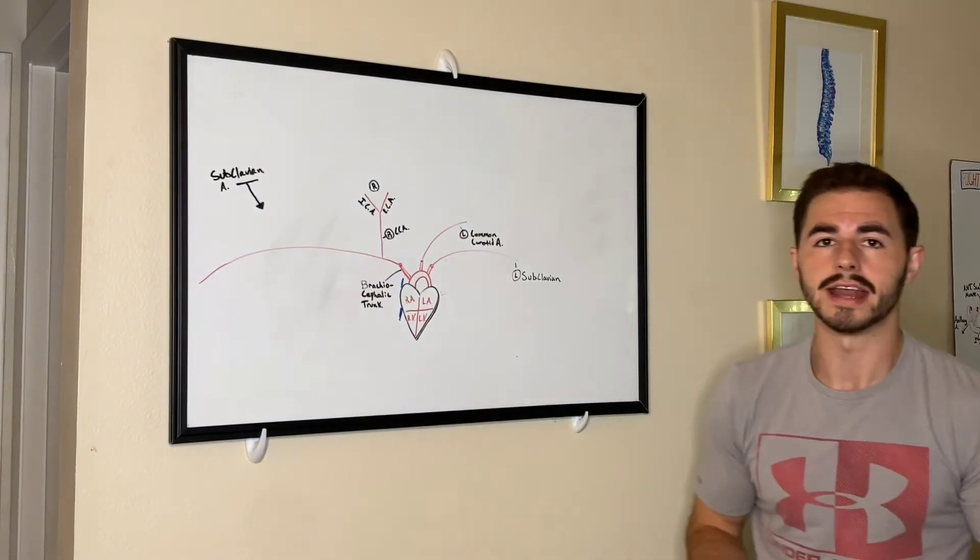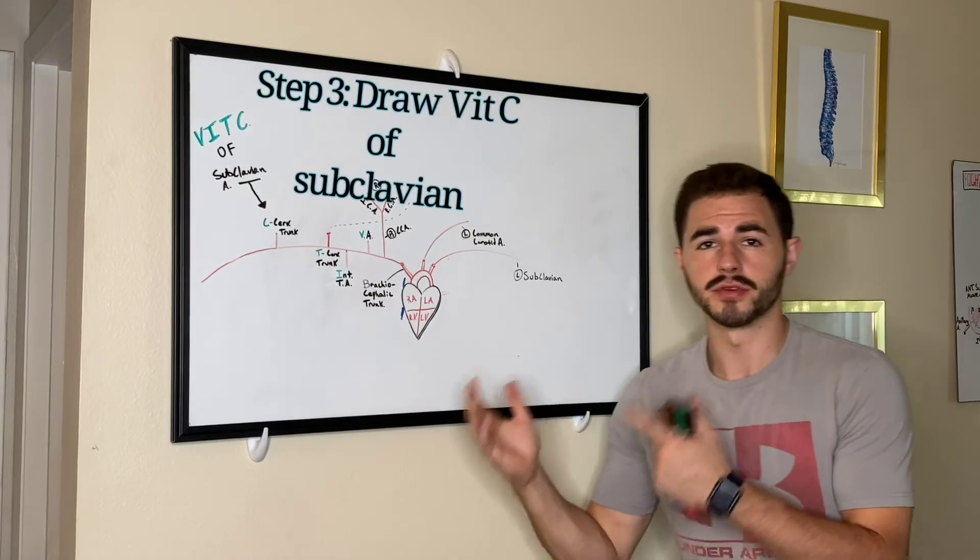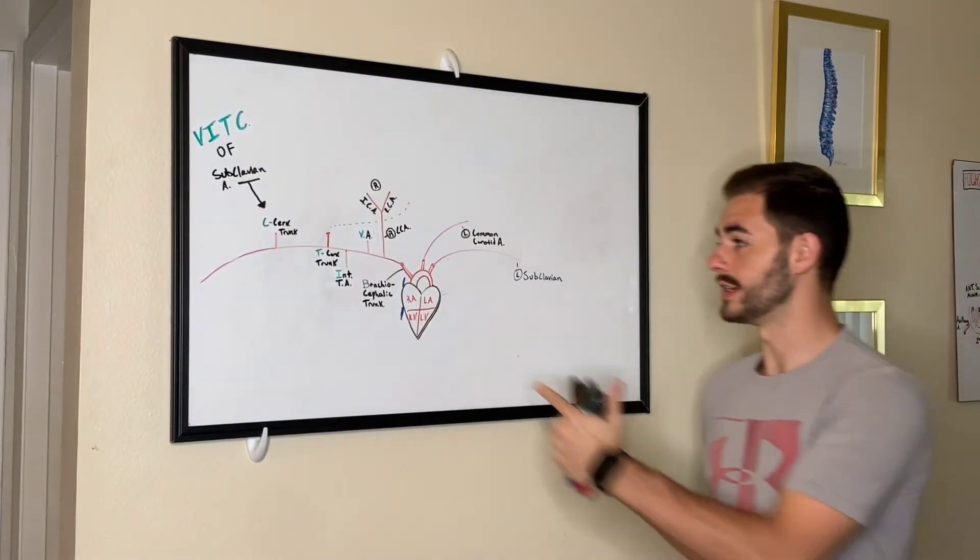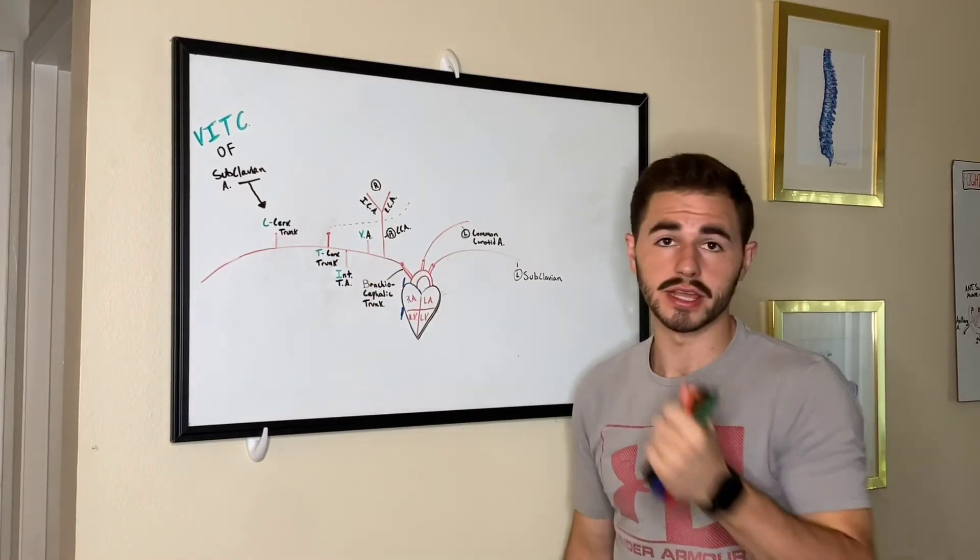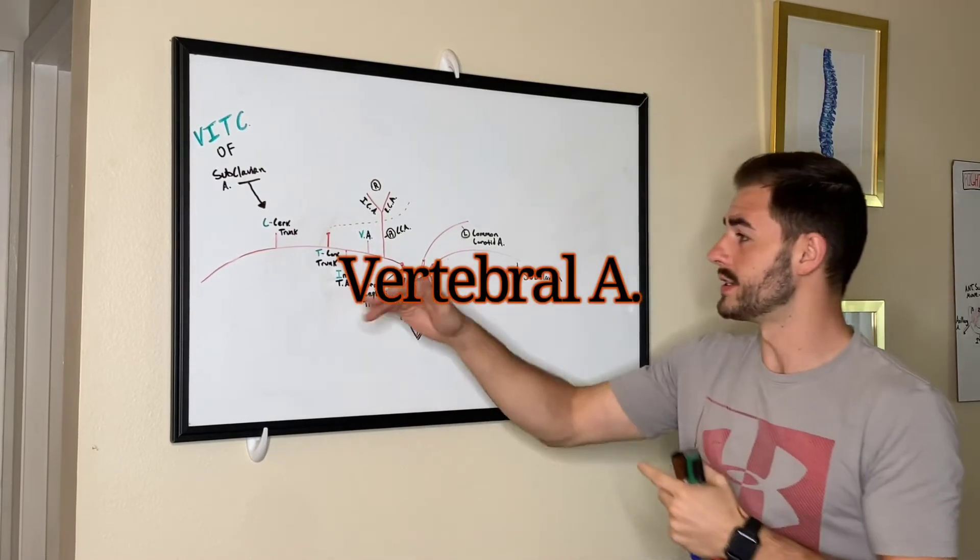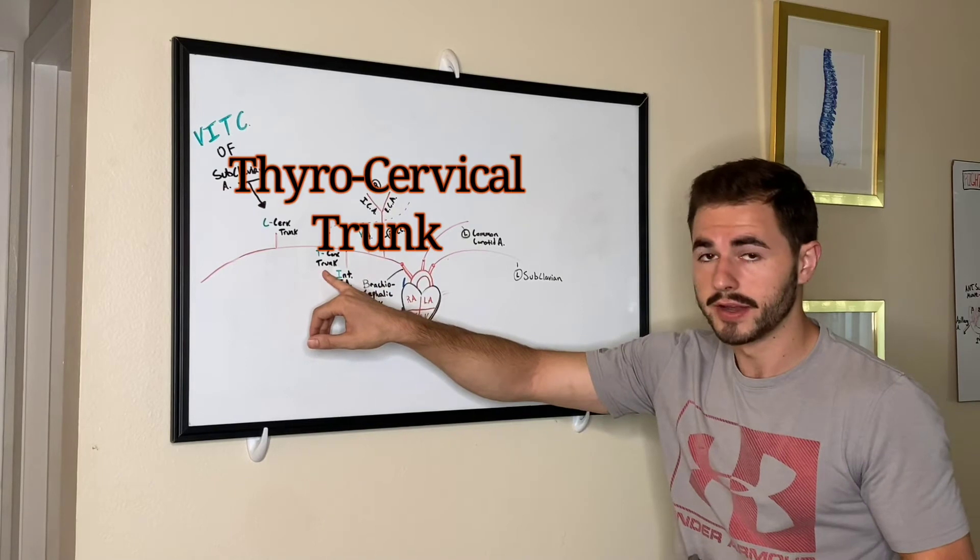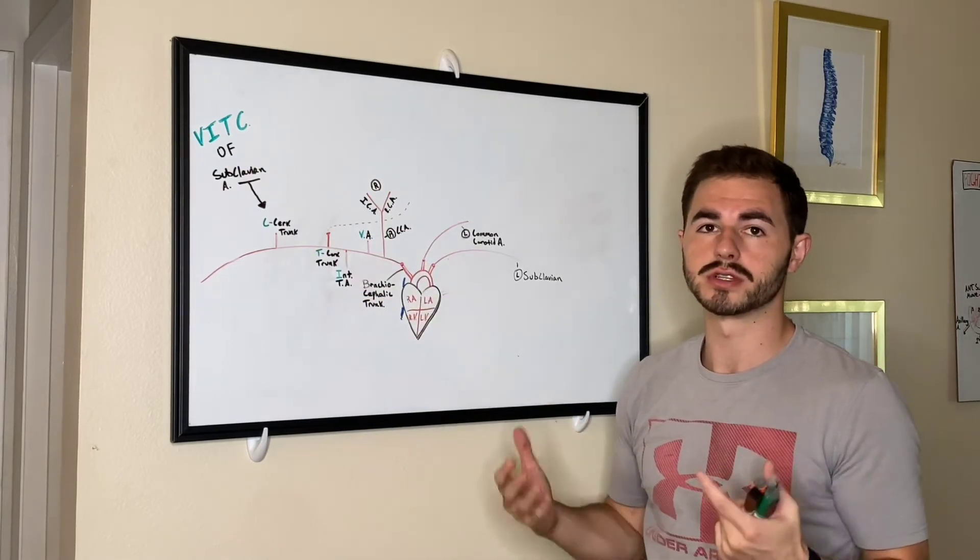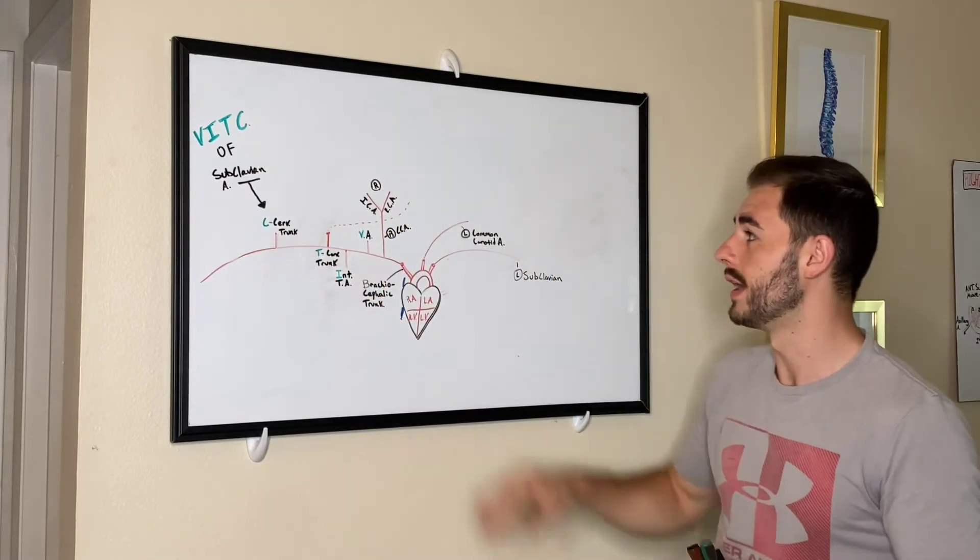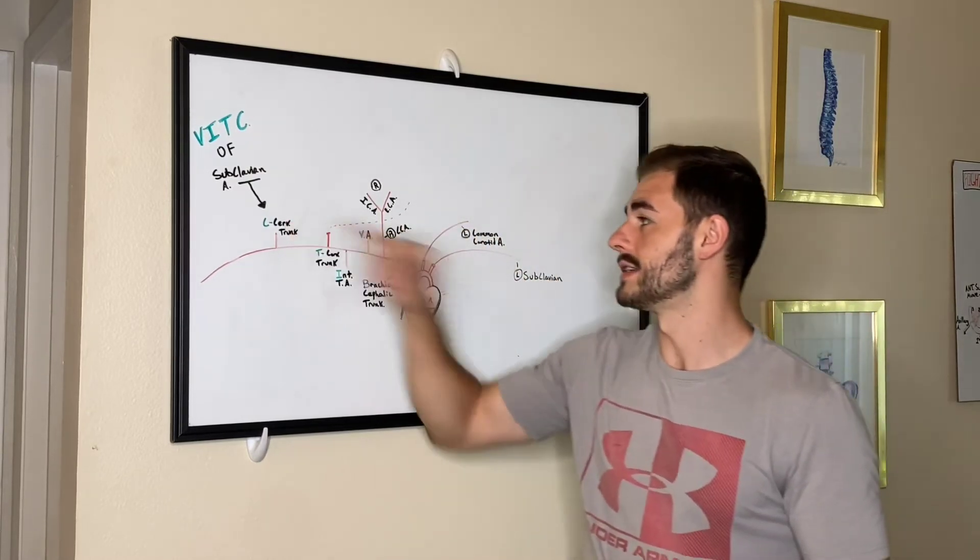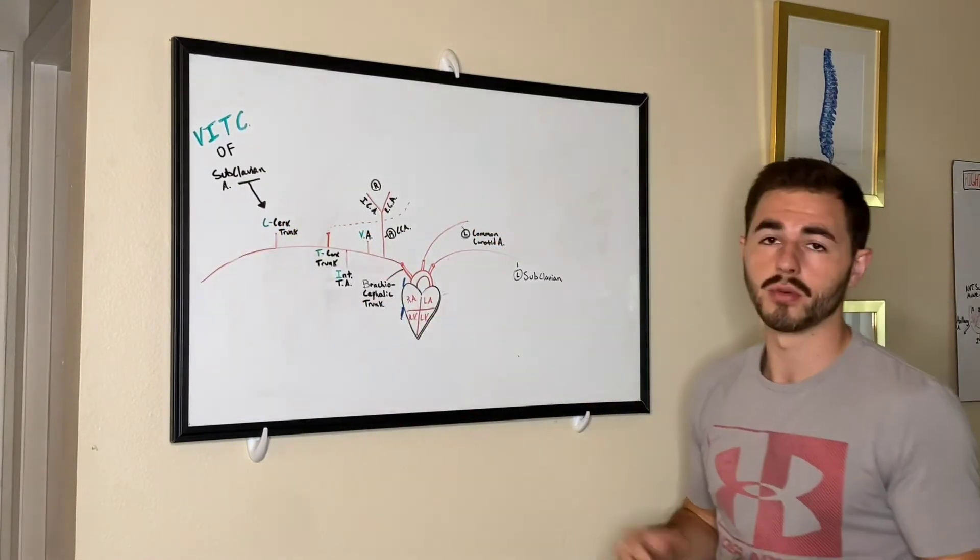Step three is going to be crucial in getting the VITC of the subclavian artery. Step three is going to be for VITC. So as you see here, ladies and gentlemen, we got VITC are the main branches coming off of the subclavian artery. So for the first one, it's the vertebral artery. The second one is the internal thoracic artery going down. And then we have the thyrocervical trunk. Now what's coming off of this thyrocervical trunk is what's most important. This is going to be known as the inferior thyroid artery. And I'll get into that a little bit in just a little bit when I talk about the ECA. So next is the C for costocervical trunk. And then that's that right there. That's all we have to know for that.